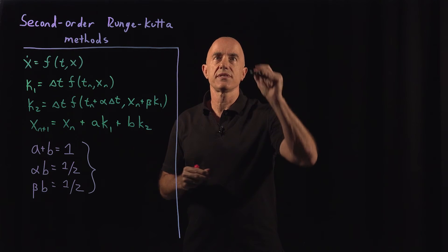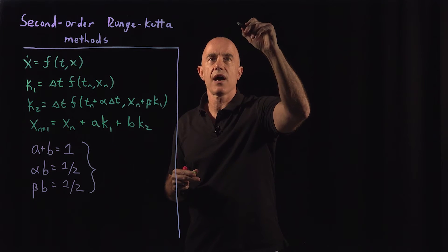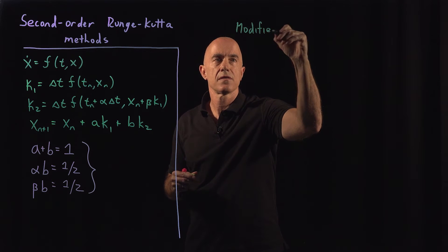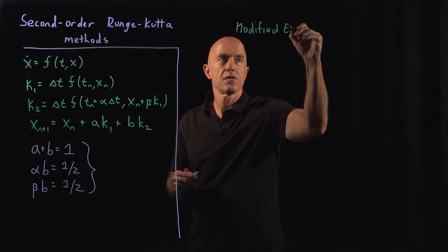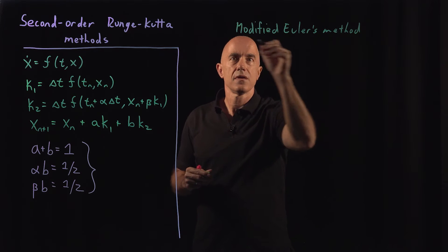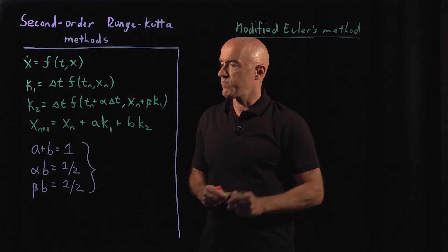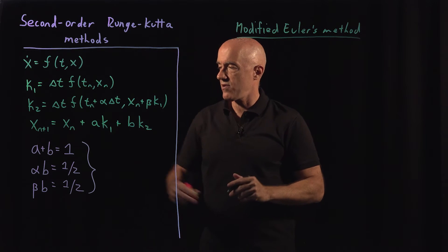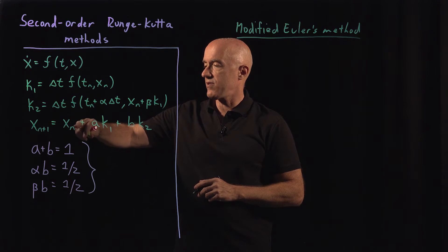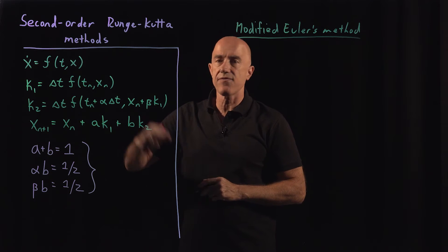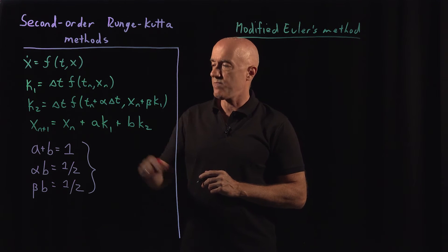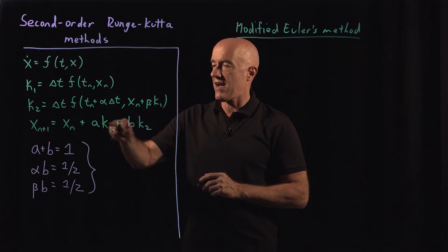Okay, now let's use this method, and we can derive the modified Euler's method. So what are the values of these parameters for the modified Euler's method? If you remember, x_{n+1} equals x_n plus the average value of the slopes at the two endpoints, or delta t times the average value.